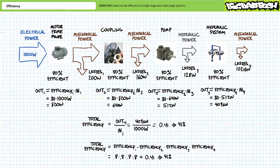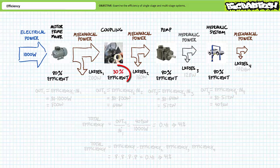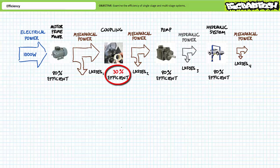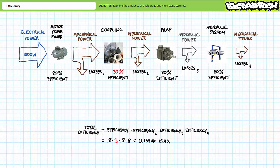The efficiency of a multi-stage system is the product of the individual stage efficiencies, and total efficiency will always be less than the least efficient stage — a chain is no stronger than its weakest link. Consider the consequence of a failing coupling whose efficiency drops to 30%. The total efficiency becomes 0.8 × 0.3 × 0.8 × 0.8, or roughly 15.4%. Output equals efficiency times input: 1,000 watts times 15.4% yields only 153.6 watts of usable output. Note how the system efficiency is now less than even the 30% failing coupling stage. This quick method does not yield intermediate results.